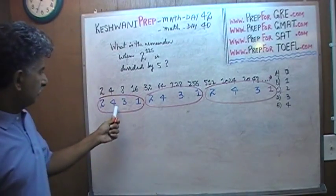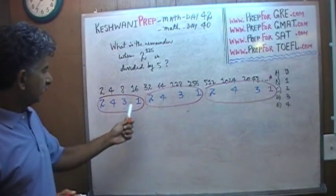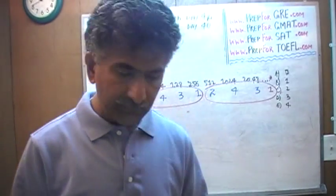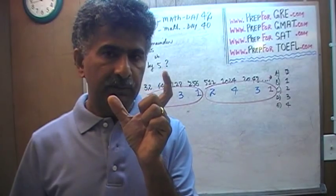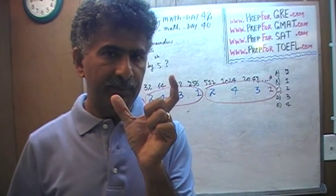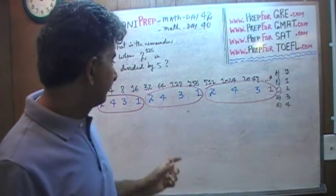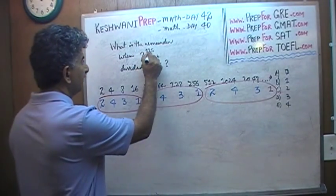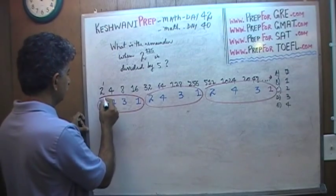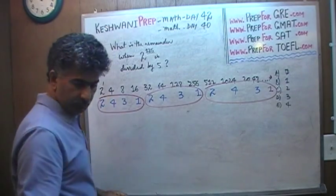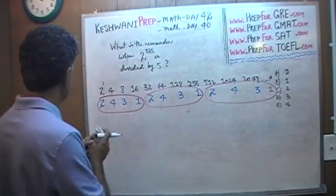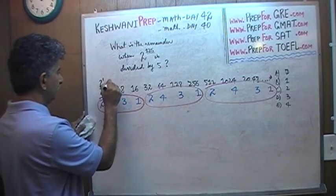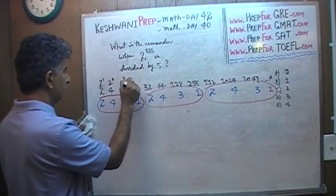The pattern 2, 4, 3, 1 repeats itself. The question is: how many complete segments of this repeating pattern do we have? Each segment is made up of 4 parts. Altogether we have 2 raised to 125, and this series starts at 2 raised to 1, then 2 raised to 2, 2 raised to 3, 2 raised to 4, and so on.